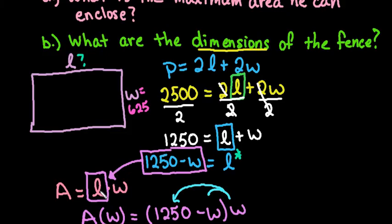You can either find length by doing the area that we just found divided by W, or we can just plug it into this equation. I'm going to plug it into this equation right here, and I'm going to say that the length is equal to 1250 minus 625.